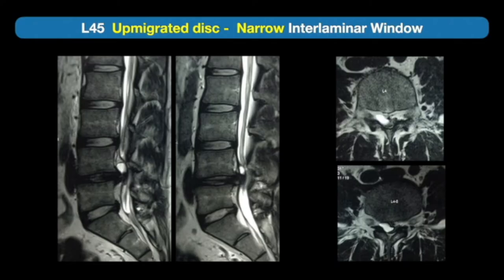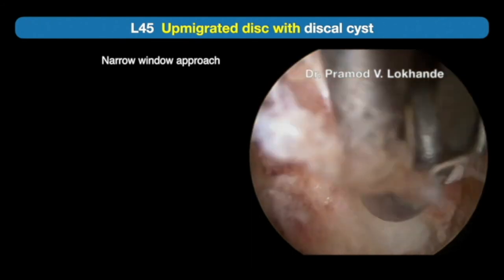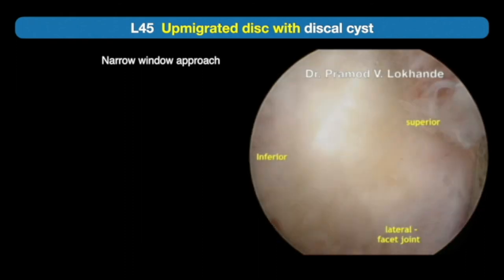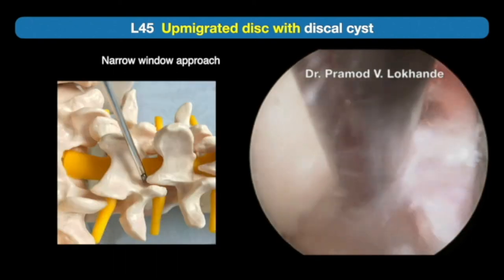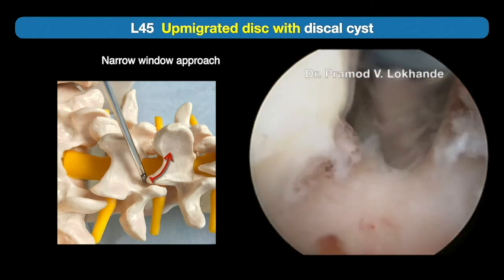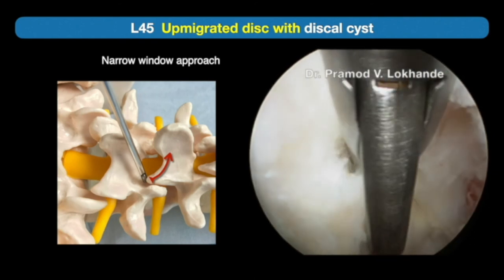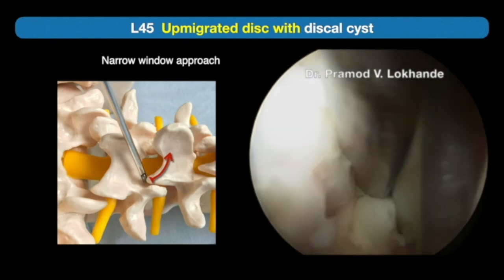Now consider the second case scenario: a narrow interlaminar window. This is an up-migrated L4-5 disc herniation with a discal cyst, and the interlaminar space is very narrow — so we will be doing bone drilling. This is a right-sided approach. Once the endoscope is inserted, some muscle fibers are removed to expose the ligamentum flavum. We identify the facet joint and release the superficial part of the flavum attached to the medial margin of the facet. The tip of the descending facet is identified and drilling is started from the tip of the descending facet, continued upwards to the ascending facet, widening the interlaminar window. Then we start cutting the ligamentum flavum layer by layer to open up the epidural space.